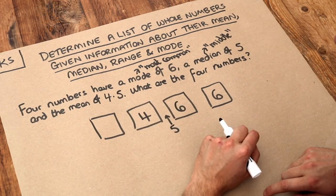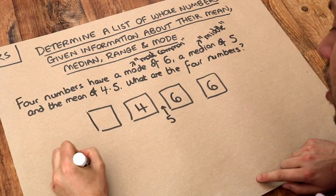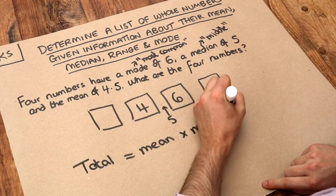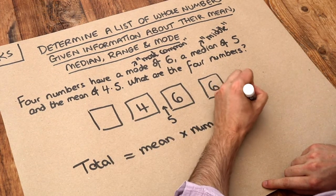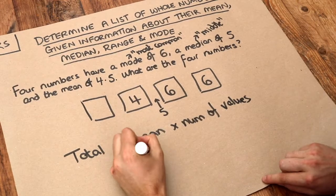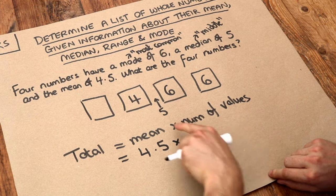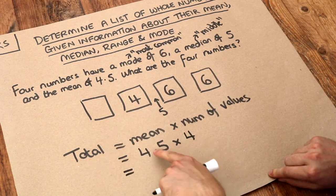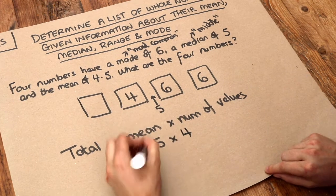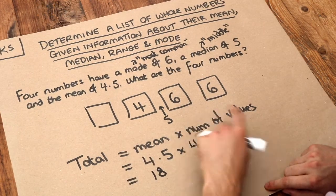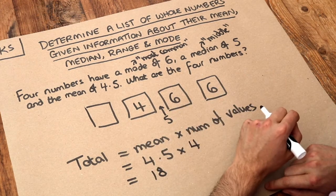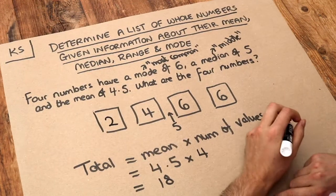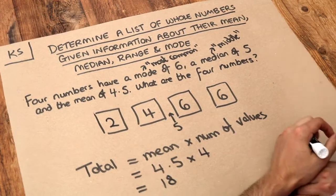The mean is 4.5. We know that the total of the numbers is equal to the mean times the number of values. So our mean is 4.5, times four values. Now 4.5 doubled is nine, doubled again is 18 — so the total is 18. If we add up the other values, four plus six plus six is 16, and if the total is 18, this last value must be two. And there we go — we've worked out the four numbers.